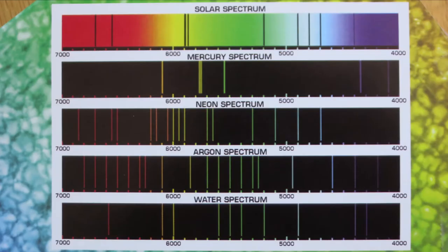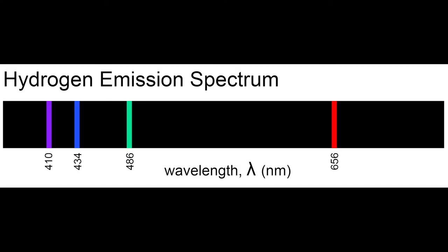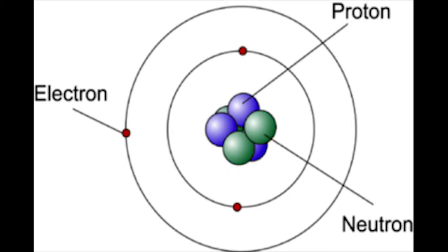One of the most amazing uses of a spectroscope is identifying what something is made of. It turns out that different elements have their own light signature, like a unique fingerprint. This fingerprint depends on the arrangement of electrons in the atom.